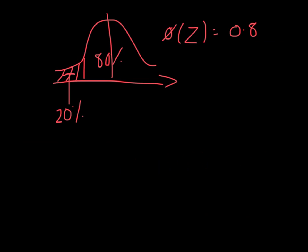So I've got that Z is 0.842. We need to be careful here. We're working to the left of the graph, so that's actually a negative Z value.